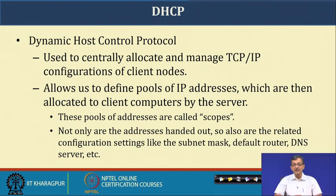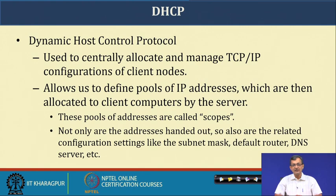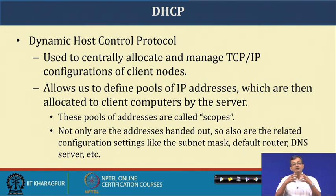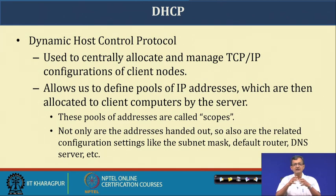DHCP is used to centrally allocate and manage TCP/IP configurations of client nodes. It allows an administrator to define pools of IP addresses - known as DHCP scopes - which are allocated to client computers. Related configuration settings like subnet mask, default router or gateway, and DNS server addresses can also be configured. The DHCP server contains this information which can be leased out to requesting clients.